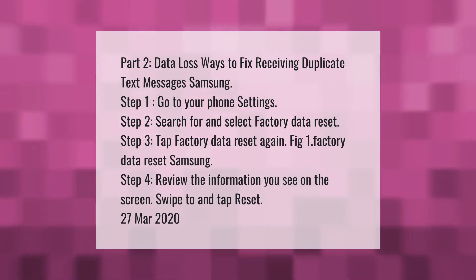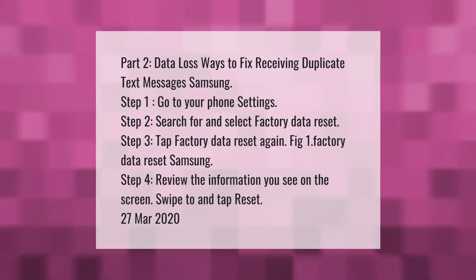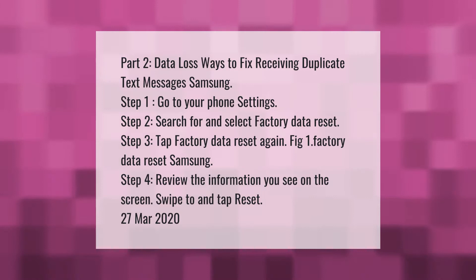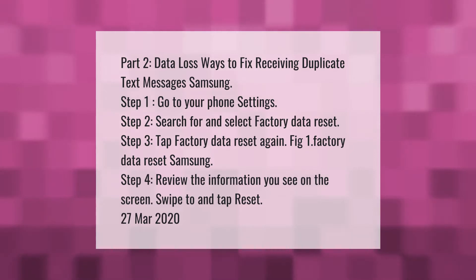Part 2: Data loss — ways to fix receiving duplicate text messages on Samsung. Step 1: Go to your phone settings. Step 2: Search for and select factory data reset. Step 3: Tap factory data reset again.